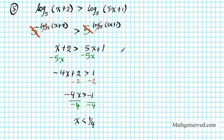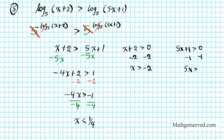Since this is a logarithmic function, the log does not take negative arguments, so it also has to satisfy two other inequalities: x + 2 > 0 and 5x + 1 > 0. Subtracting 2: x > −2. For the second, subtract 1: 5x > −1, divide by 5: x > −1/5.